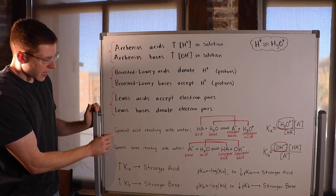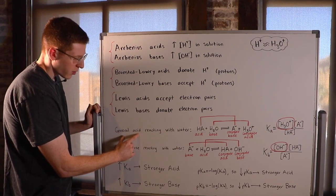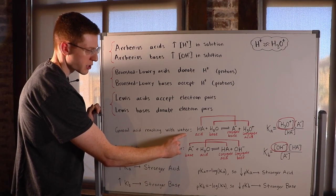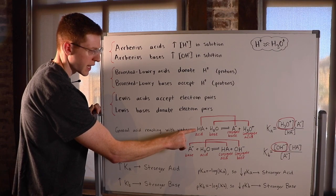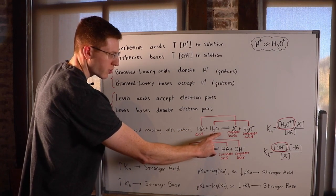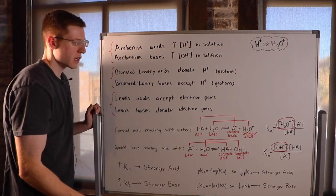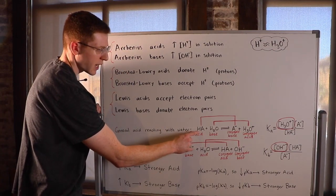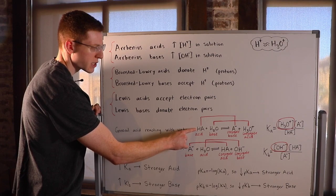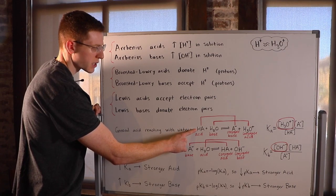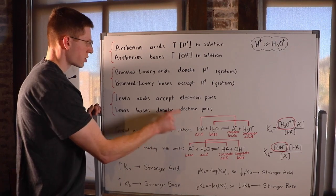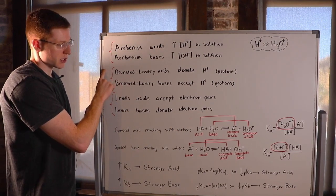So right here, I have a reaction with a general acid reacting with water. My general acid I've abbreviated as HA. My water is right here, and it forms A- and H3O+. So my acid HA is an acid because it has a hydrogen or a proton attached to it. You can think about this reaction in terms of the Bronsted-Lowry definition.